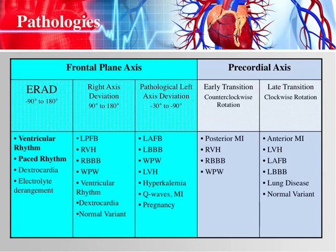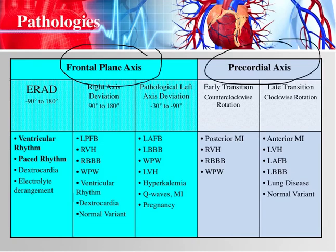Here is a list of the most common causes of axis deviation and the different types. When talking about EKG axis, you have two main types: your frontal plane and your precordial axis. Frontal plane axis is taken from all your limb leads — leads one, two, and three, AVR, AVL, and AVF. Using those will give you your frontal plane axis.